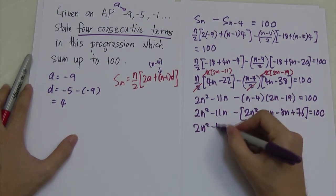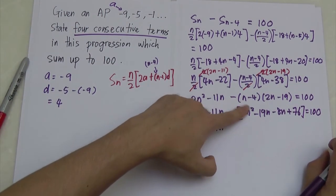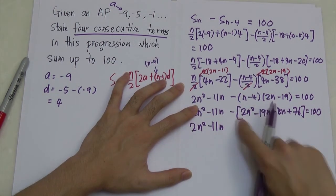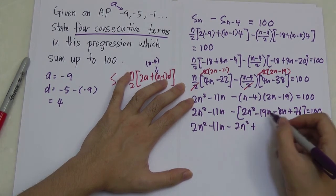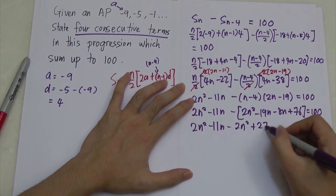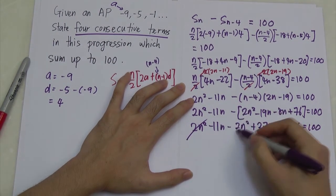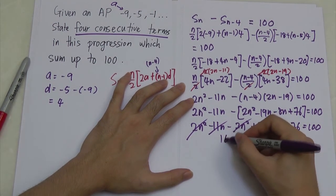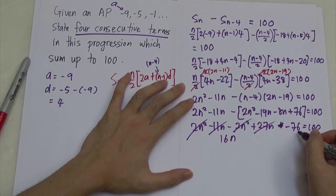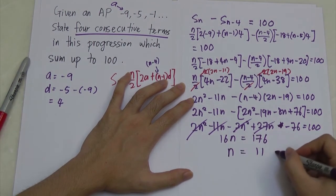Be careful with the negative sign — you must multiply it into all terms inside the bracket. So you get 2N squared minus 11N minus 2N squared plus 27N minus 76, equals 100. The 2N squared terms cancel, leaving 16N minus 76 equals 100. Moving negative 76 to the other side gives 16N equals 176, so N equals 11.